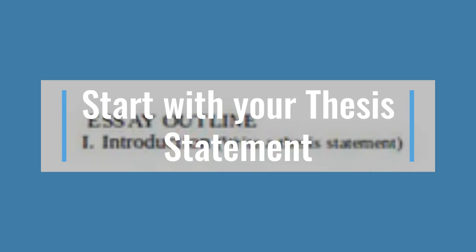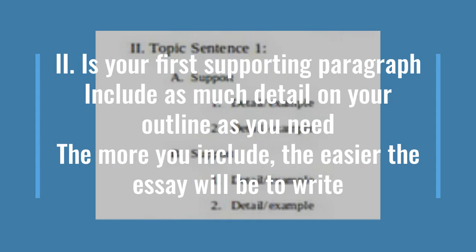You would start with your thesis statement under Roman numeral one. Remember, until you know your thesis statement — or at least a rough draft of it — you can't create an outline, much less an essay. Roman numeral two would be the start of your first supporting paragraph. Include as much detail on your outline as you need. The more information you include, the easier your essay will be to write.